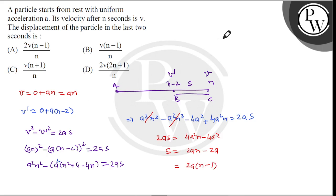Now we have a value of v upon n. So we have 2 times n minus 1 into v upon n. So 2 v times n minus 1 upon n, which is option A.